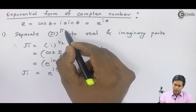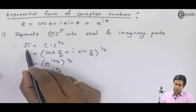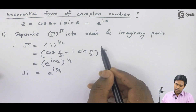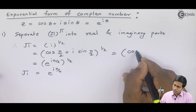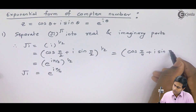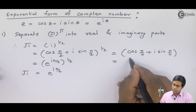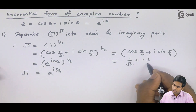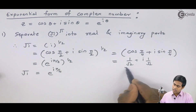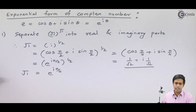Now we will see the power term. The power term is also √i. We represent √i as cos(π/2) + i sin(π/2) raised to half, and further using De Moivre's theorem this becomes cos(π/4) + i sin(π/4). We know that cos(π/4) = 1/√2 and sin(π/4) = 1/√2. So this term we write in the power, and the exponential form e^(iπ/4) we write in the base.